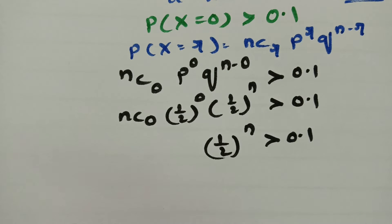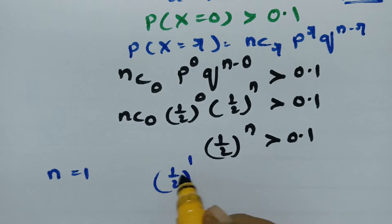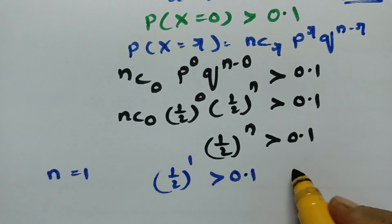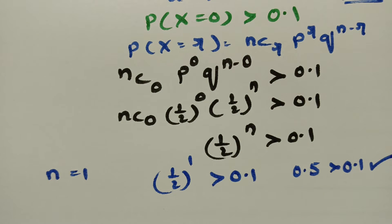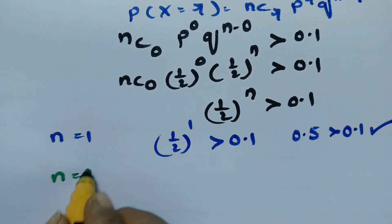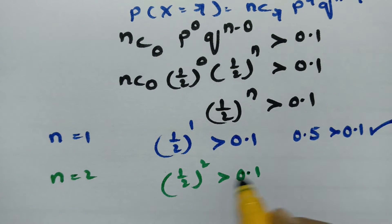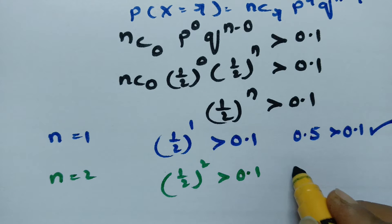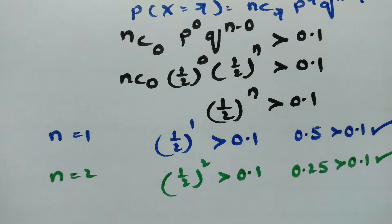If I keep n equal to 1: (1/2)^1 = 0.5, which is greater than 0.1 — the relation holds. If I keep n equal to 2: (1/2)^2 = 1/4 = 0.25, which is still greater than 0.1 — this is also satisfied.